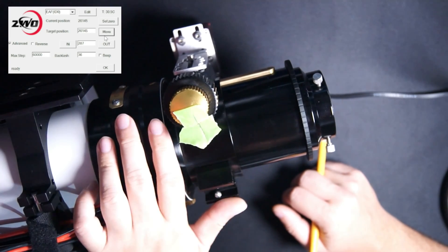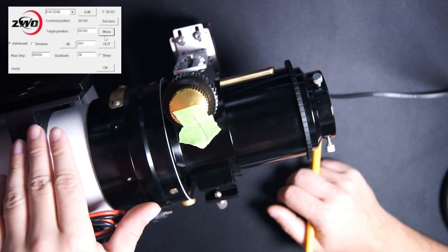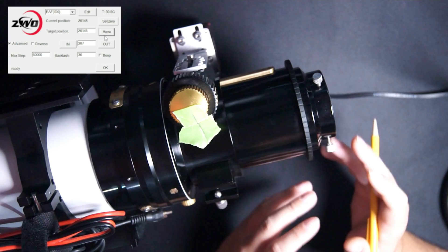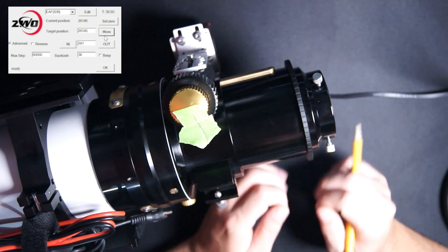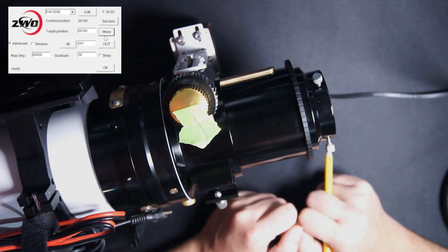And once I get this mounted to my pier, I'll be able to go ahead and try an autofocus routine and see if it successfully completes it. All right, everyone, that wraps up this video on backlash and backlash compensation for ZWO EAF. Hopefully this video will help you get into focus.